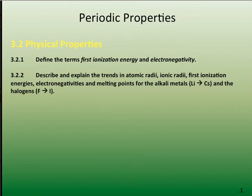We should also be able to describe and explain the trends in atomic radii, ionic radii, that first ionization energies, electronegativities, and melting points for the alkali metals and for the halogens.